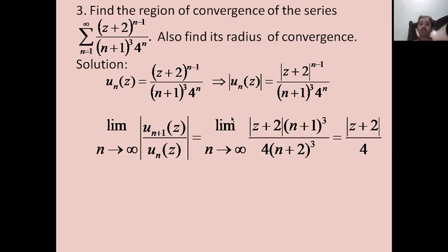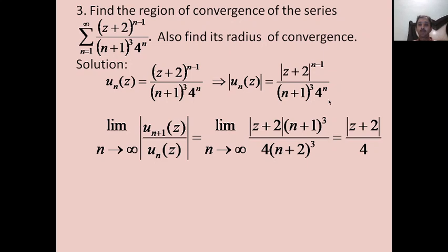We use D'Alembert's ratio test, considering lim |u_{n+1}(z)| / |u_n(z)|. Here u_{n+1}(z) = (z+2)^n / [(n+2)³ · 4^{n+1}]. After substituting and simplifying, we get: |z+2|^n / |z+2|^{n-1} = |z+2|, and (n+1)³/(n+2)³ → 1, and 4^n/4^{n+1} = 1/4. So the limit equals |z+2|/4. Since |z+2|/4 can be taken outside the limit and the remaining expression tends to 1, the limit is |z+2|/4.